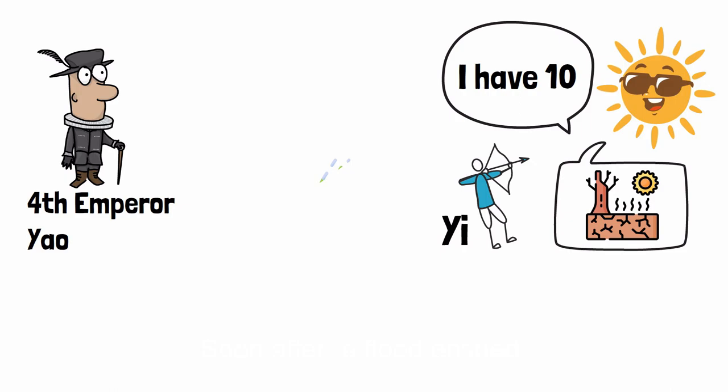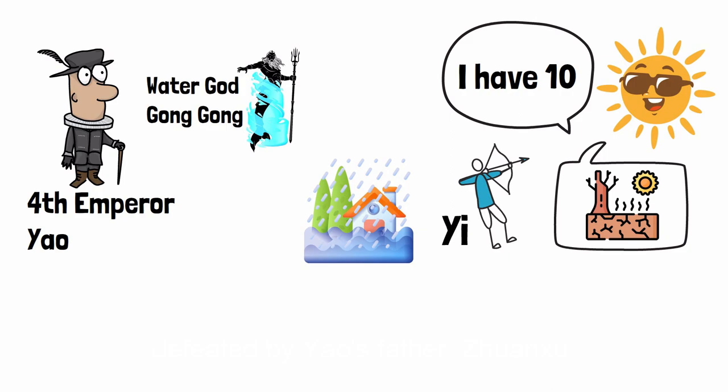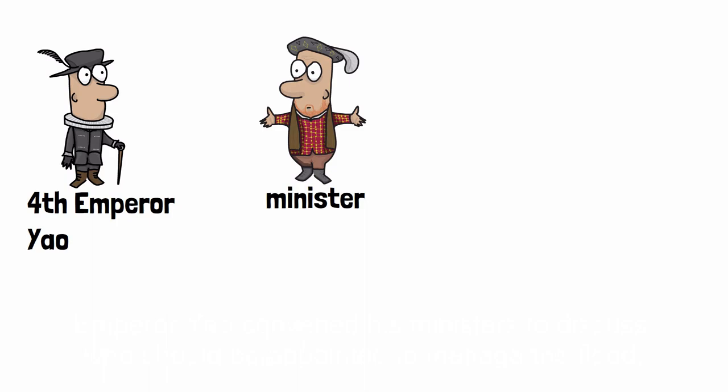Soon after, a flood ensued. The great flood was triggered by Gong Gong, the water god. After being defeated by Yao's father, Zhuanxu, Gong Gong knocked over Mount Buzhou, causing a cataclysm and rampant floods. By the time of Emperor Yao, the floodwaters had not yet receded.